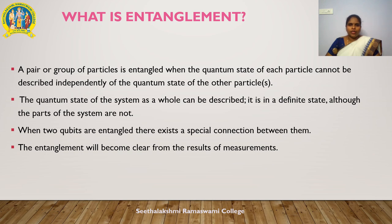One of the counter-intuitive phenomena in quantum physics is entanglement. A pair or group of particles is entangled when the quantum state of each particle cannot be described independently of the others. When two qubits are entangled, there exists a special connection between them that becomes clear from the results of measurement. For example, two particles created so that the total spin of the system is zero: if the spin of one particle is measured and found to be counterclockwise, it is guaranteed that the other particle's spin will be clockwise. This happens without any information exchange between the entangled particles — they could be billions of miles apart and the entanglement would still be present.